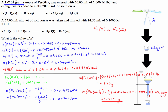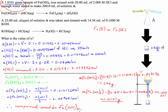Since the mass of 1.0101 grams matches the original sample mass given in the problem, it's easy to see that the compound must be Fe(OH)3. Therefore, N equals 3.